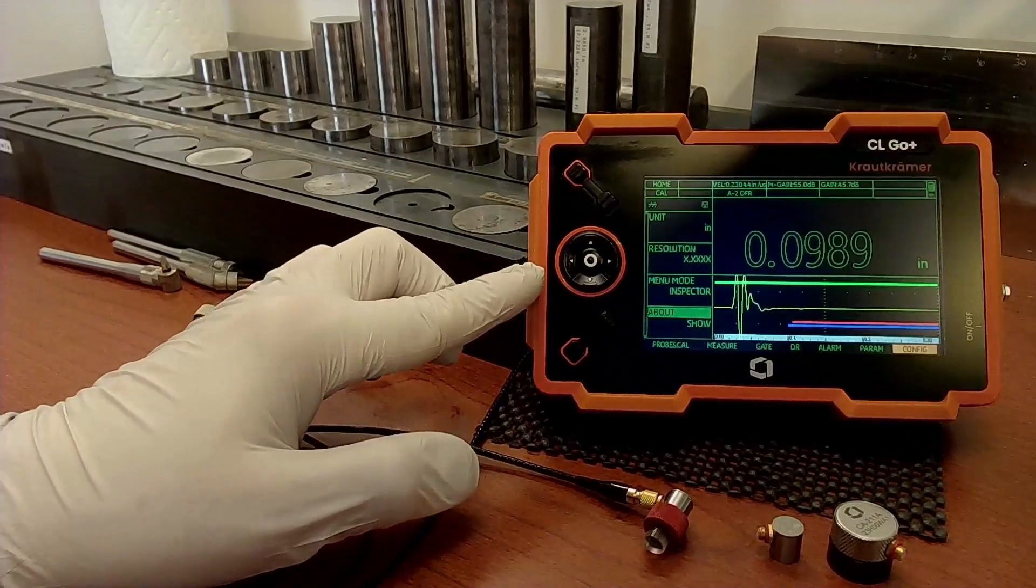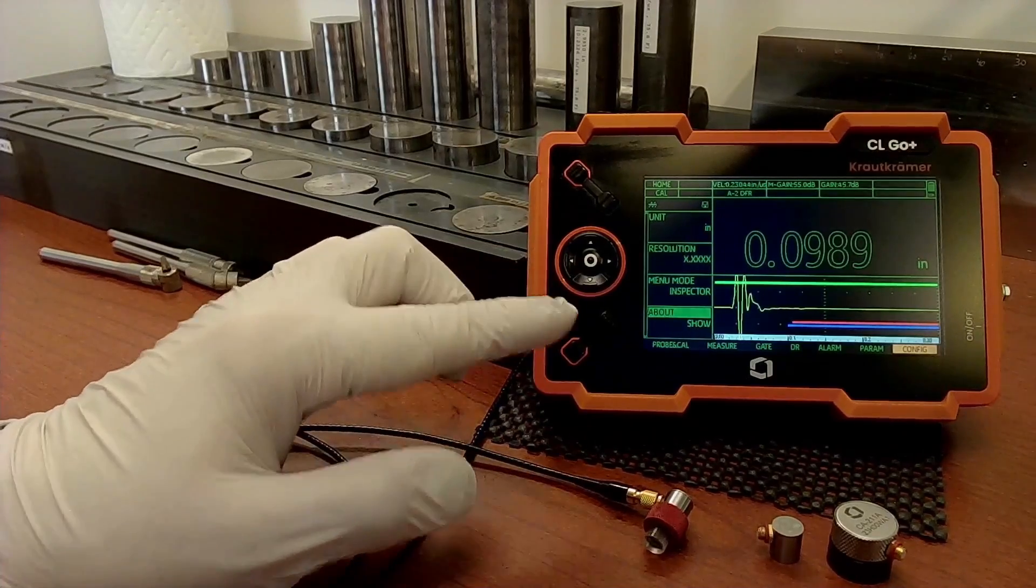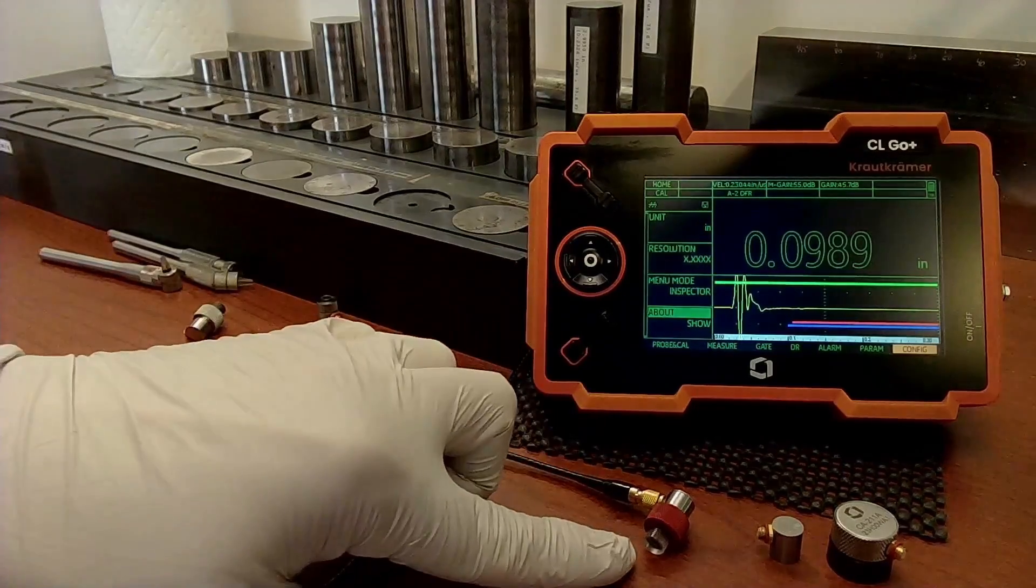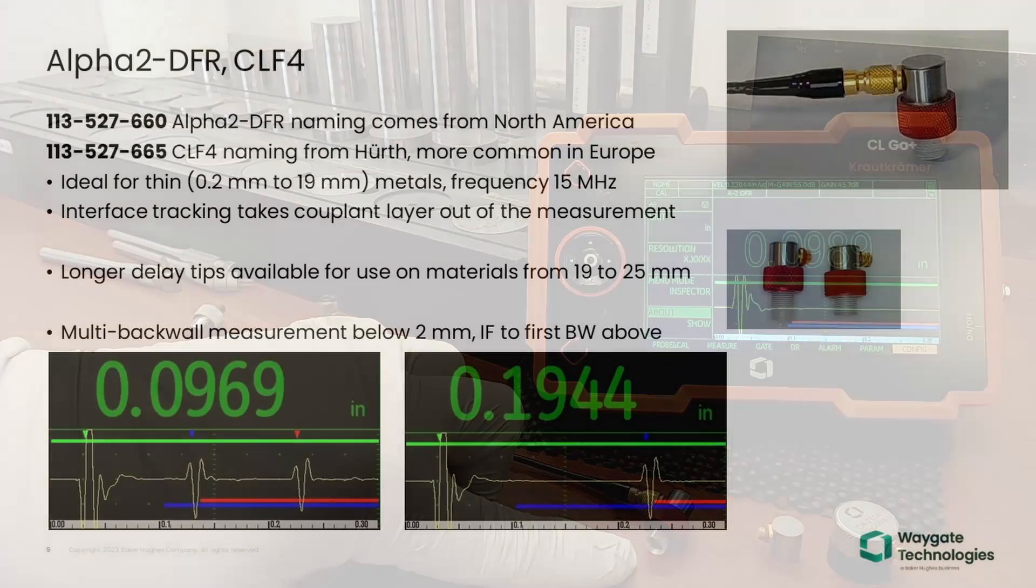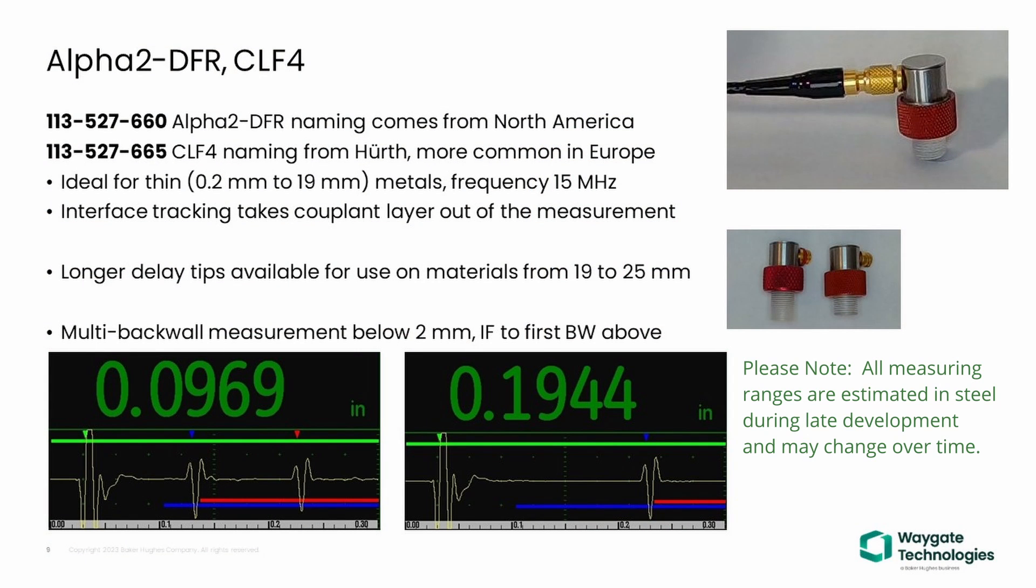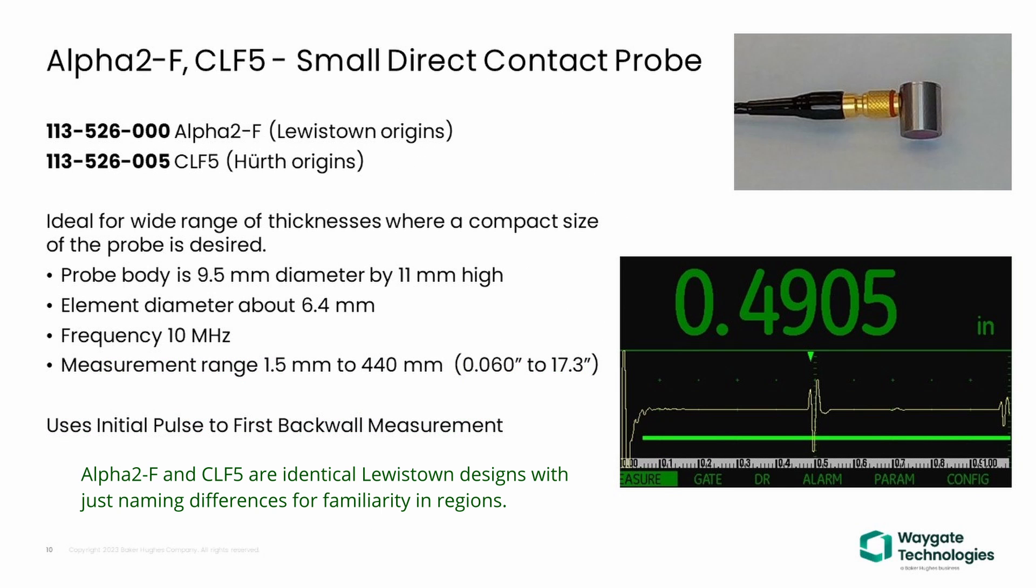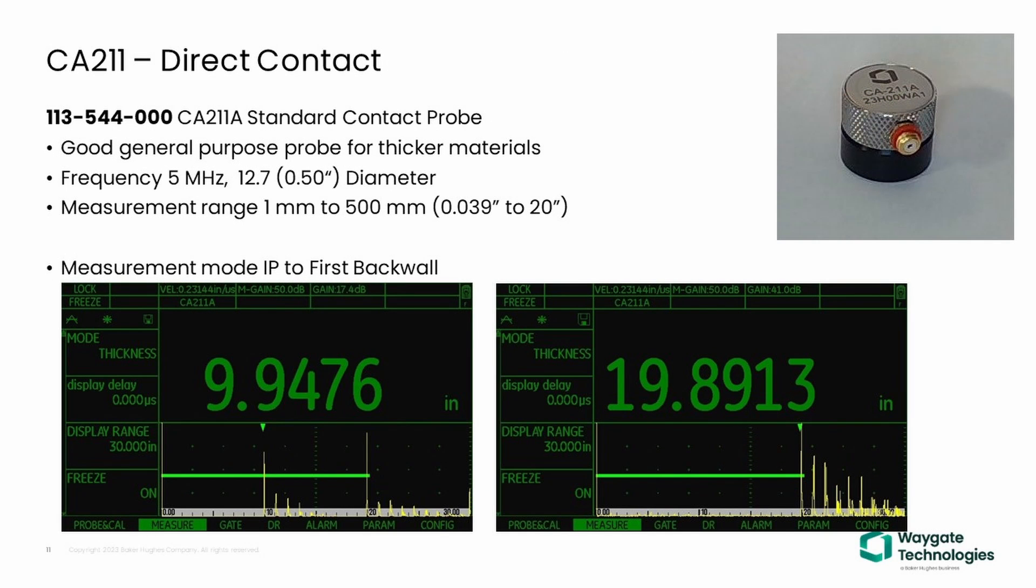So for the CL-GO, we're initially supporting the Alpha-2 DFR and its equivalent from Germany, the CLF-4. We have a direct contact miniature probe, that's the Alpha-2 or the CLF-5. And we have the CA-211, a little bit larger diameter, can penetrate deeper into thicker materials.